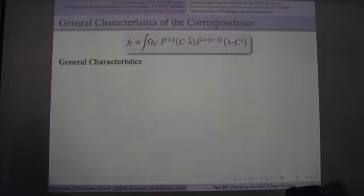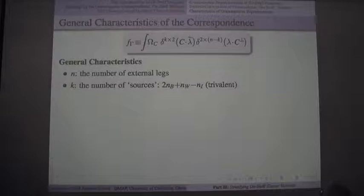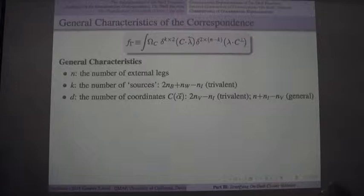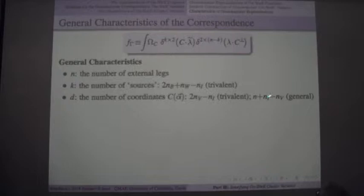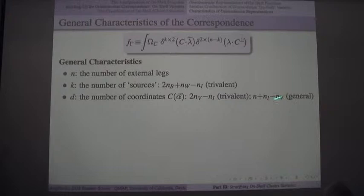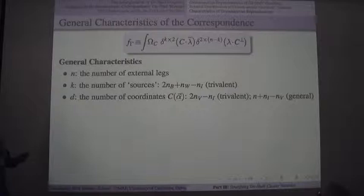D, the number of coordinates, is graph-theoretically: two degrees of freedom per trivalent vertex minus one for every internal line, which equals the total number of edges minus the number of vertices. The number of delta functions beyond momentum conservation is always two times K plus two times (N−K) = 2N. The constraints that C contains lambda and C is orthogonal to lambda-tilde always imply lambda is orthogonal to lambda-tilde, so you can always factorize as 2N−4 delta functions times momentum conservation.